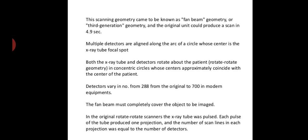The scanning geometry came to be known as the fan beam geometry or the third generation geometry, and the original unit could produce a scan in 4.9 seconds. Multiple detectors are aligned along the arc of a circle whose center is the x-ray tube focal spot. Both the x-ray tube and detectors rotate around the patient in rotate-rotate geometry in concentric circles whose centers approximately coincide with the center of the patient. Detectors may vary in number from 288 in the original to 700 in the modern equipments. The fan beam must completely cover the object to be imaged.